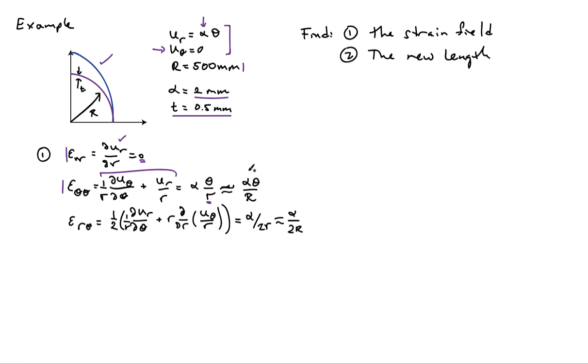So we'll go ahead and approximate this normal strain in the tangential direction by alpha theta divided by capital R which is a constant here. So that's a small error. It's about a tenth of a percent that we're making when we make that approximation.